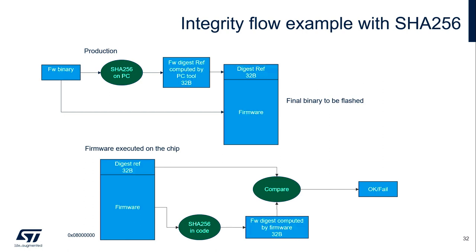This is an integrity check flow, for example using SHA-256. After you get the binary of the firmware, do a computation of the SHA-256 digest on the PC and get the digest value. This digest can then be attached to the firmware to compose a full binary, including both the firmware and the reference digest value.